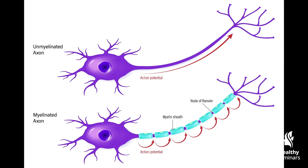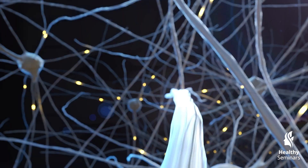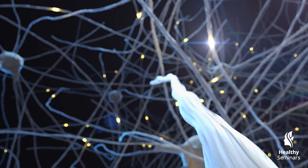A-delta fibers are myelinated and conduct signals rapidly, often associated with sharp or tingling sensations, while C fibers are unmyelinated and slower, transmitting dull, aching, or warming sensations. When Qi arrival is elicited, these nerve fibers send signals to key brain regions.